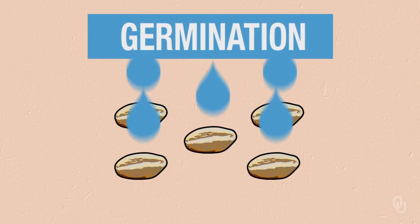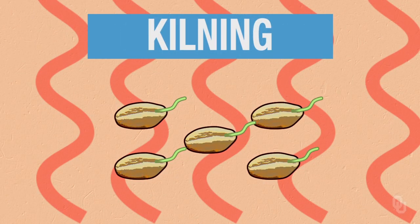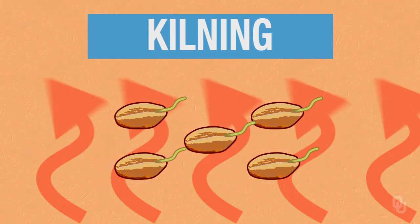First you have to malt the barley, which involves changing your basic seed and soaking it in water. As soon as that seed sprouts an endosperm, there's a chemical reaction inside the seed that creates all of the starches. You can also take that grain and cook it by various kilning means — there's wet kilning and dry kilning.